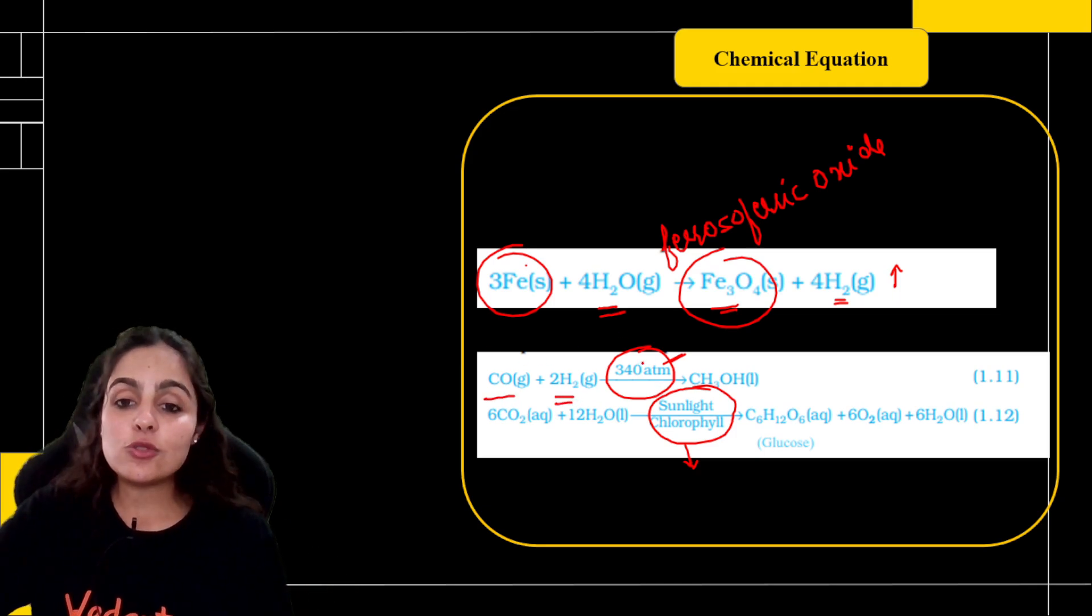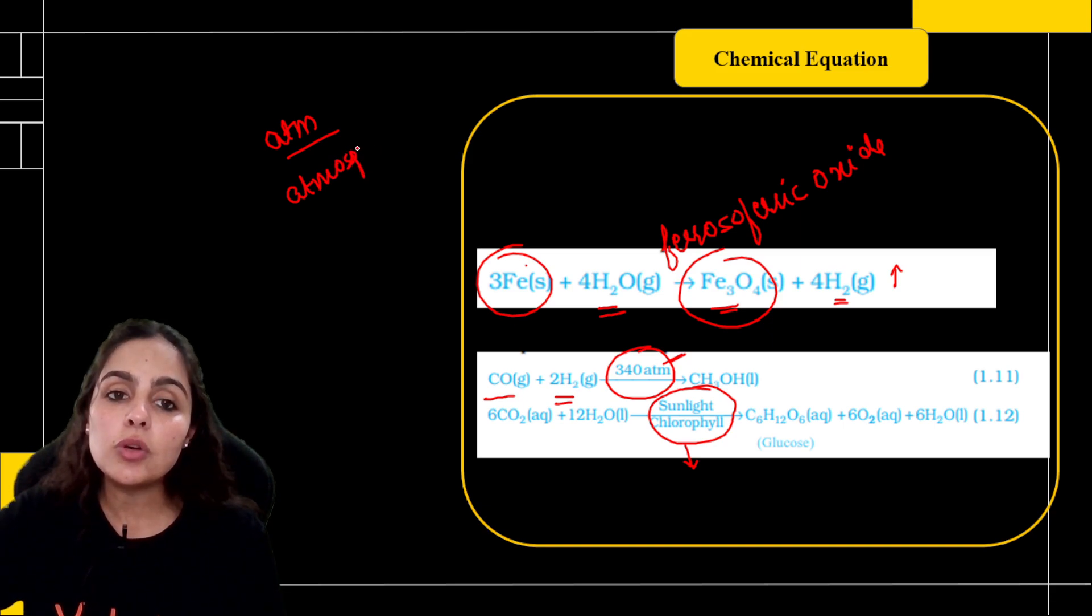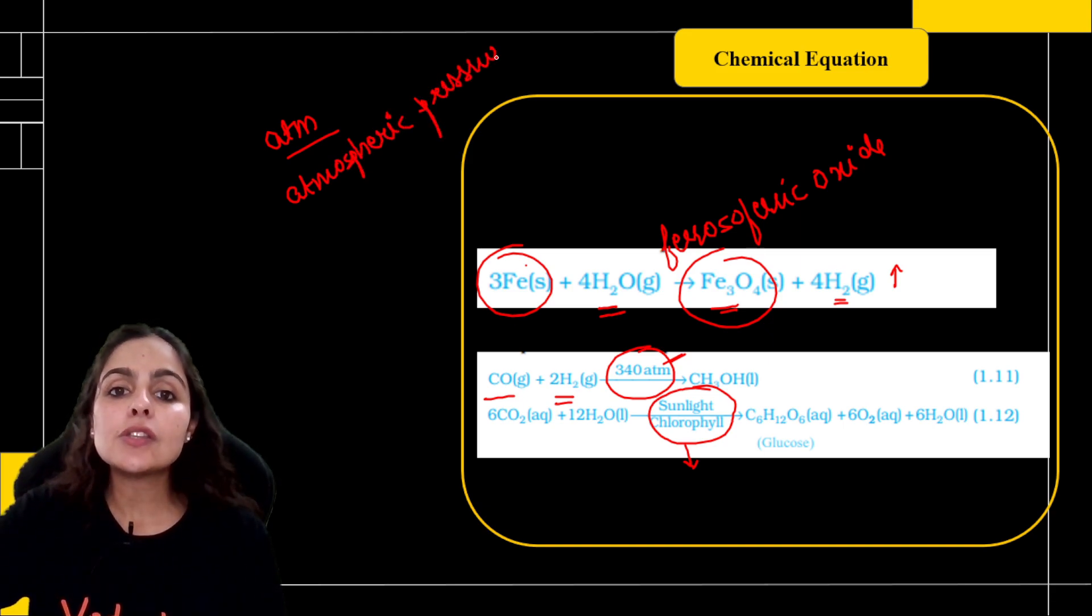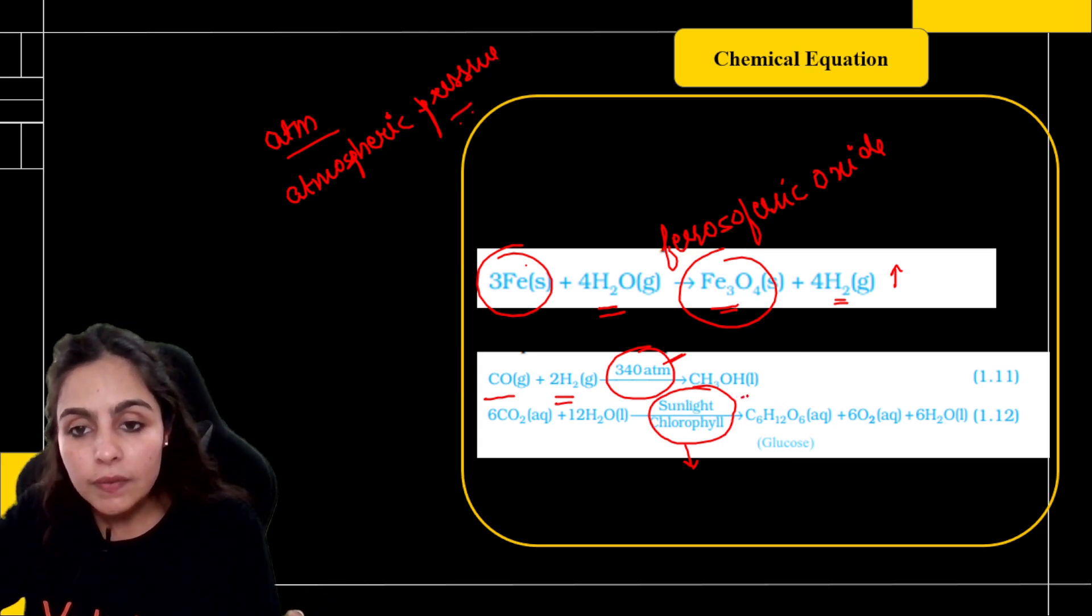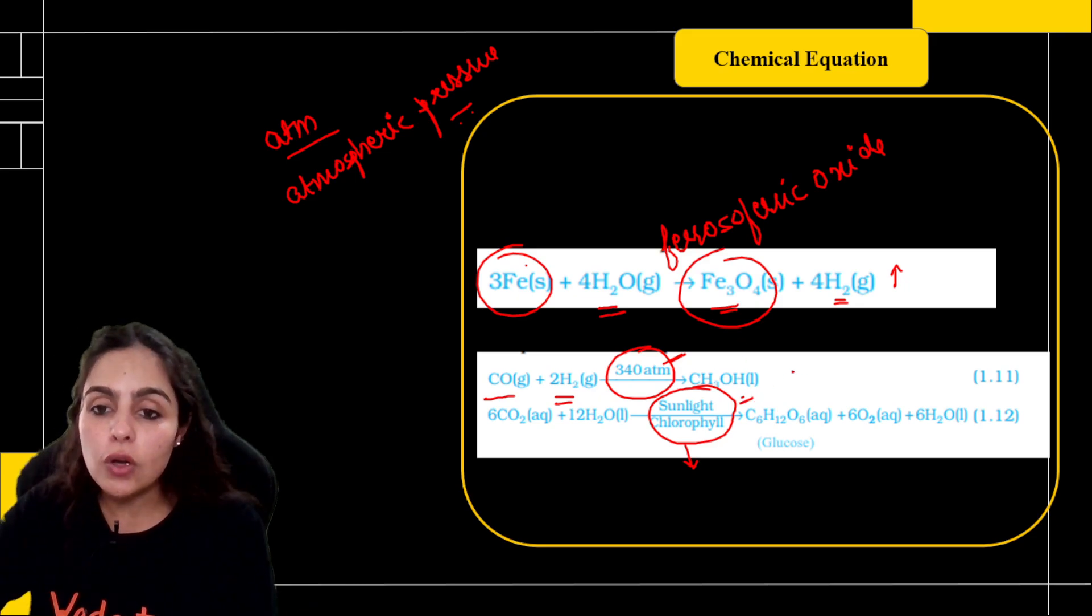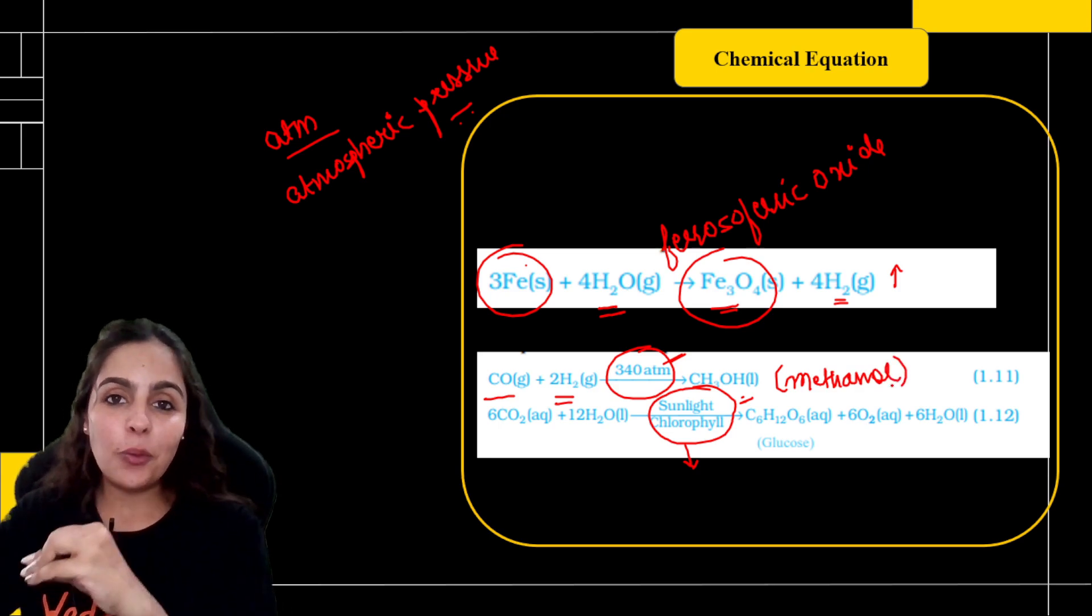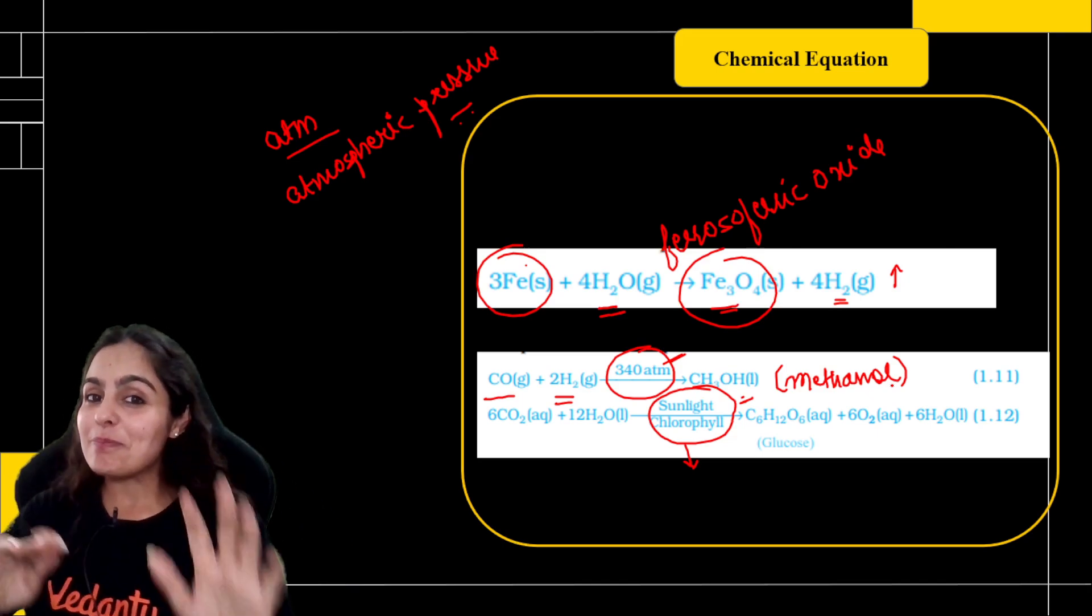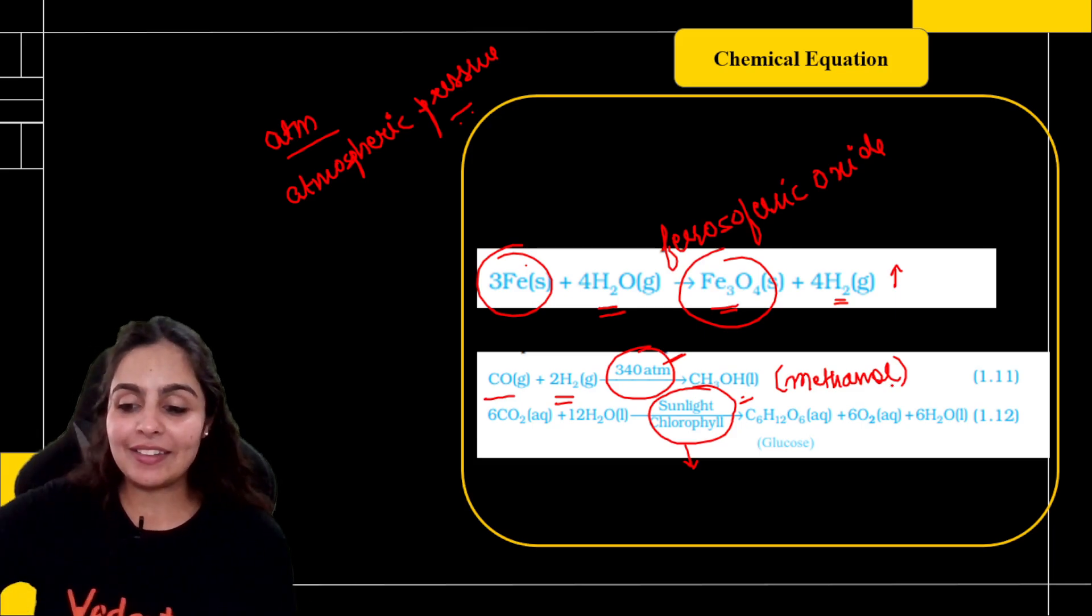If you think about it, if this information is missing, what will happen? You won't even know that photosynthesis requires sunlight and chlorophyll. So these conditions are very important to verify that what you are writing is correct or not. If these conditions are not there, this reaction will not happen. Very obvious. CO carbon monoxide reacts with hydrogen in presence of 340 ATM. ATM is short for atmospheric pressure. You have to provide 340 ATM, then only you will get the product which is called as methanol. C-H-3-O-H which is one of the alcohols, but we cannot consume it. It's a poisonous alcohol.